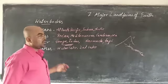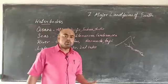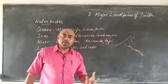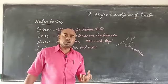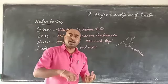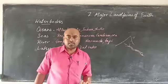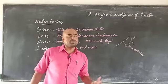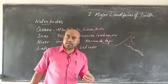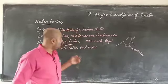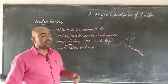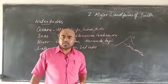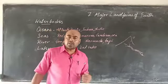Next is lakes. Lakes are water bodies that are accumulated and surrounded on all sides by land. Two big examples of lakes in India are Polar Lake and Dal Lake in Kashmir.